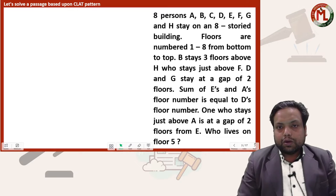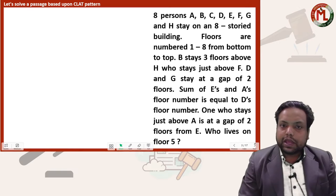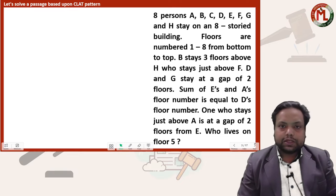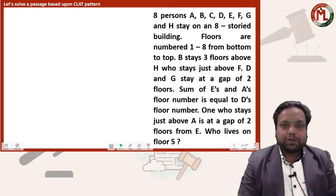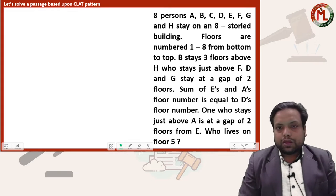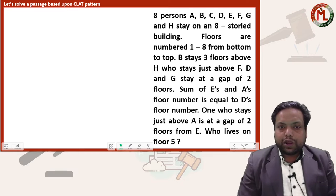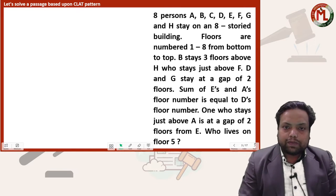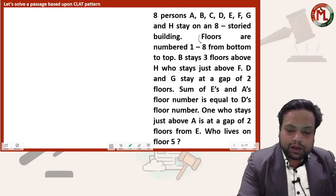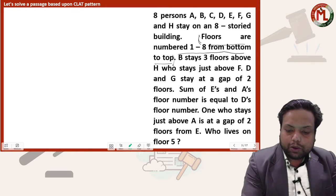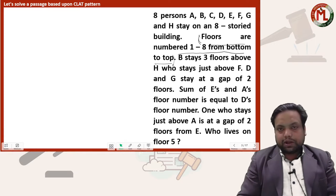This problem is given as a seating arrangement. Eight persons — A, B, C, D, E, F, G, and H — stay in an eight-storied building. We have to find out which person is staying on which floor. Floors are numbered one to eight from the bottom to the top.